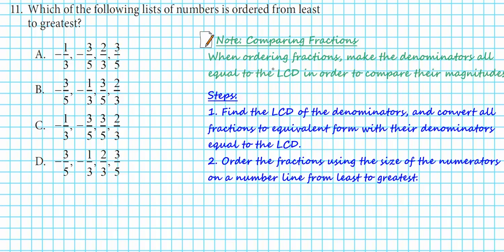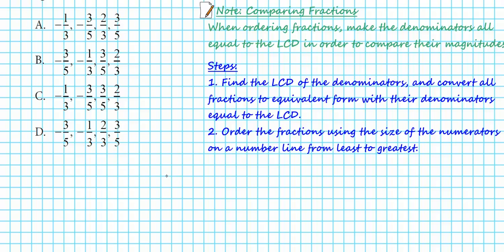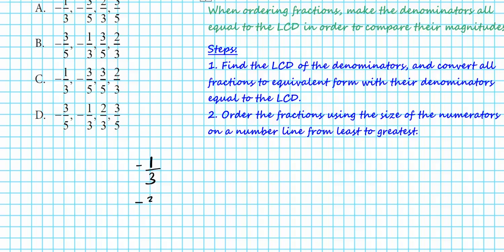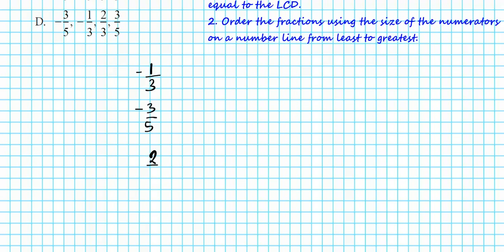Before we get started, one thing you want to know concerning how to compare fractions: if you're ordering fractions, you want to make all the denominators equal to the LCD and then compare the numerators, taking into account the sign also. So we're going to find the LCD of the denominators of all the fractions in option A, and then order the fractions using the numerator. The denominators are three and five, so the LCD of three and five — the smallest number both can go into evenly — is 15.